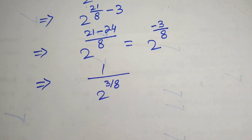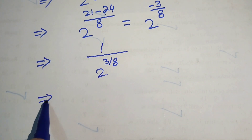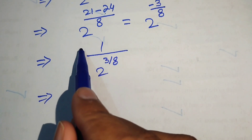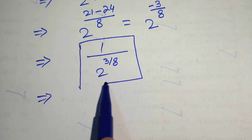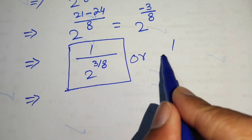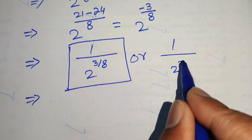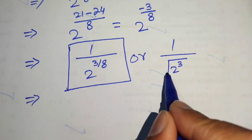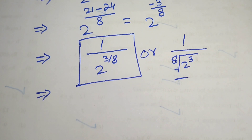The negative exponent becomes a positive exponent, giving our final answer. We can write this as 1 over 2 to the power of 3 over 8, or equivalently as 1 over the 8th root of 2 to the power of 3. This is the final simplified form. Thank you for watching this video — please subscribe to my channel for more exciting videos.